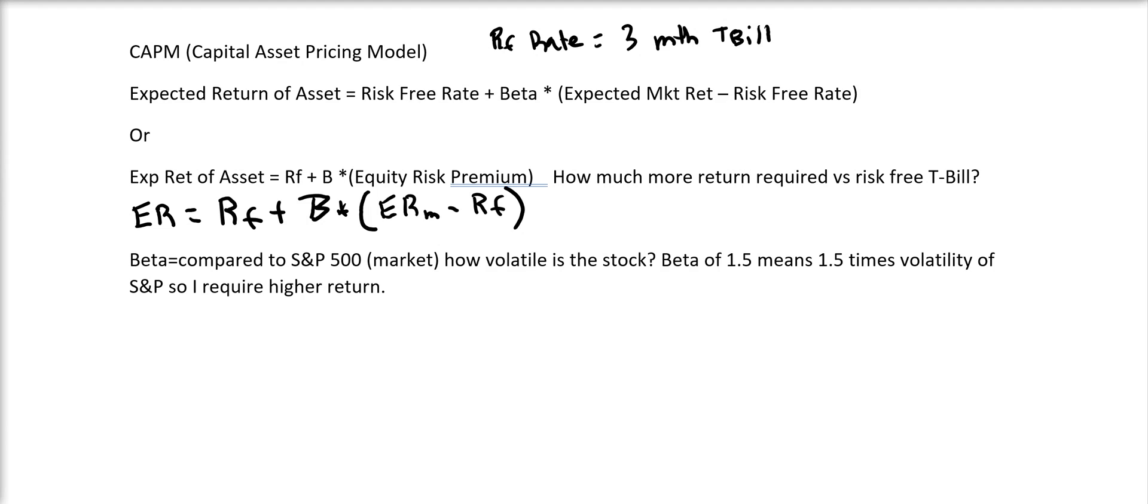If we look at the formula, what do we have here? The expected return of an asset is equal to the risk-free rate plus the beta times the expected market return minus the risk-free rate. Or another way to look at this, the expected return of an asset equals the risk-free rate plus the beta times just what we'll call the straight equity risk premium.